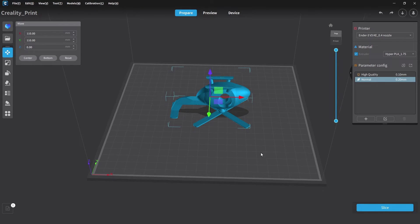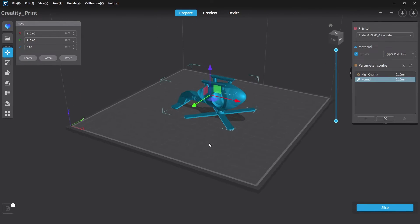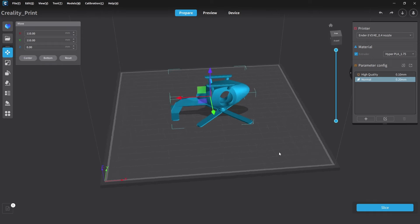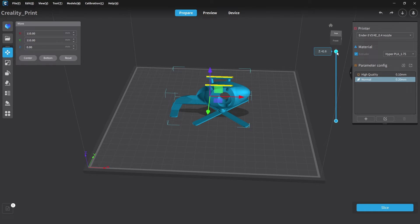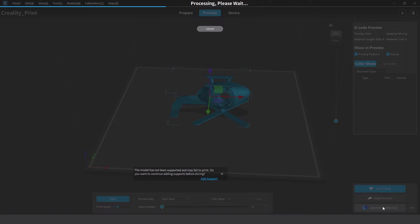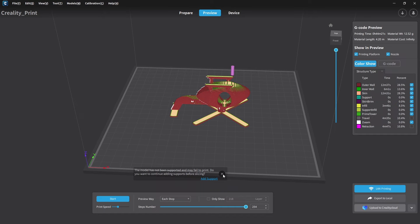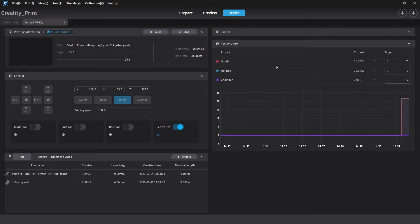For slicing more files the Creality print software is used. It has a simple workflow and beginners can use the stock profiles to quickly get files ready. The printer can print up to 500mm a second but for PLA the default print speeds are set at 300mm a second. The default settings produce good results and these can be adjusted as the user gains more experience. Having WiFi capabilities on the printer allows control and monitoring from anywhere within the Creality print software.